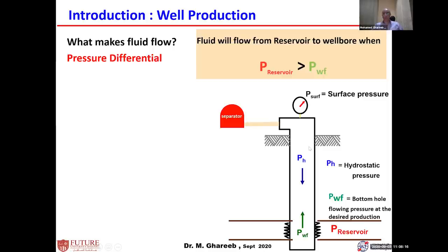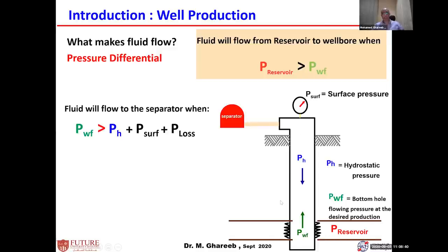But how does the flow reach the surface? In order for fluid to flow from one point to another based on delta P, the pressure at the bottom must be higher than the pressure at the top. For flow to reach from the bottom to the surface, the bottom hole flow pressure (PWF) must be higher than the hydrostatic head of the fluid inside the well from the reservoir up to the surface, plus the surface wellhead pressure required to push the fluid to the separator, plus the pressure loss inside the tubing from bottom to top.